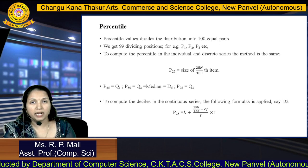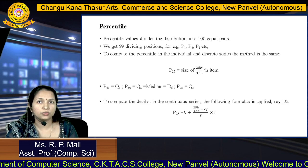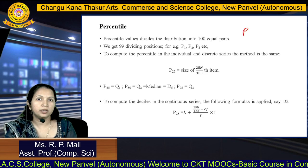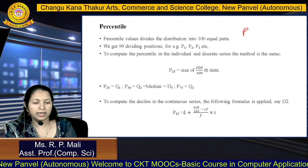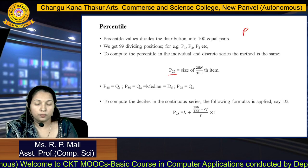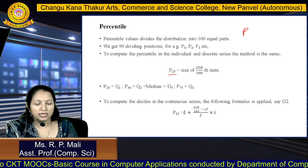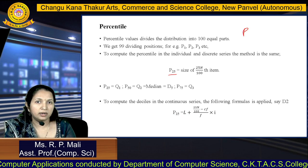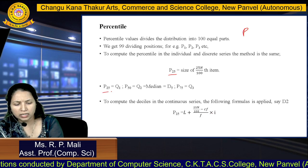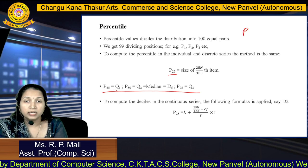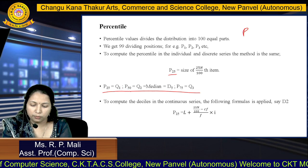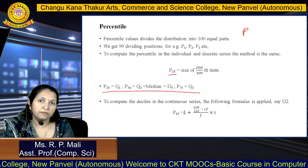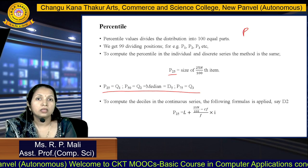Percentile means we are going to divide the whole distribution into 100 equal parts. You will get 99 dividing positions, denoted by P: P1, P2, P3, P4, P5 till P99. To compute your percentile, for example P25, the size is 25N divided by 100. For the continuous series, P25 equals L plus (25N by 100 minus Cf) divided by F, into I. Note that P25 is your first quartile, P50 is your second quartile or median (also considered as D5), and P75 is your third quartile. Thank you.